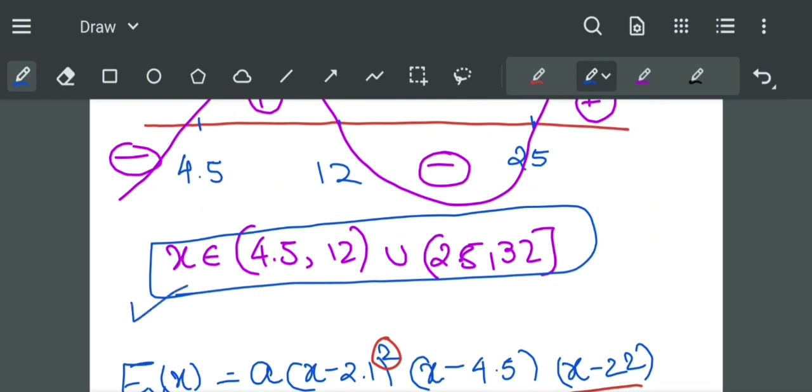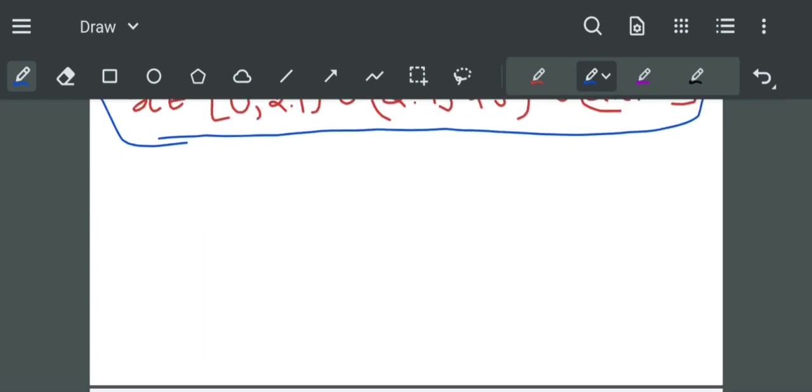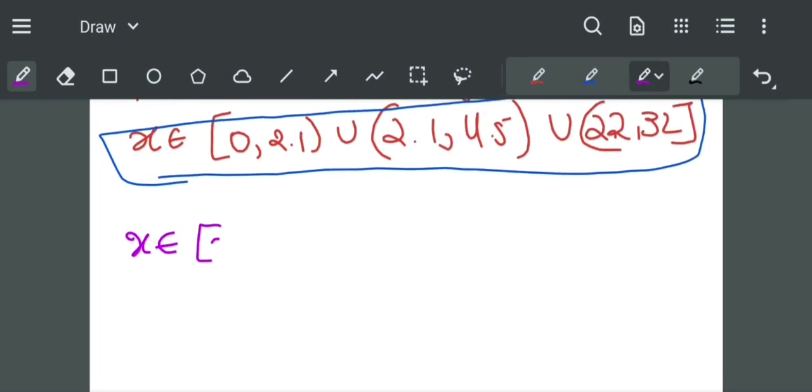Now we have to find the common points between this function and this range. Let us write here: x belongs to 0 to 2.1 union 2.1 to 4.5 union 22 to 32, this is for Vinay.